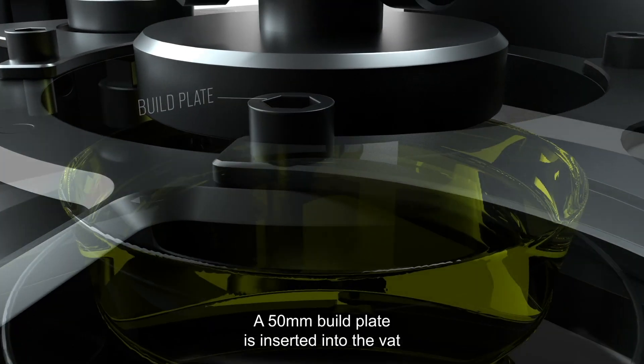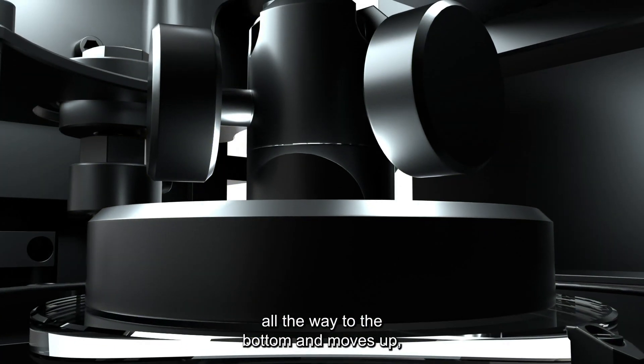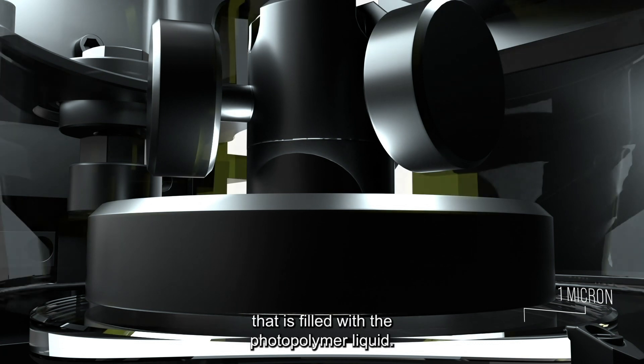A 50 mm build plate is inserted into the vat all the way to the bottom and moves up 1 micron at a time, creating a 1 micron gap that is filled with the photopolymer liquid.